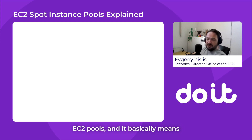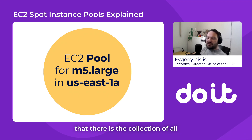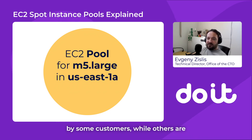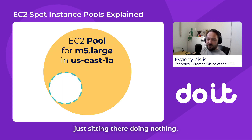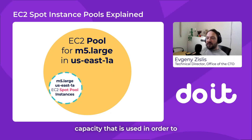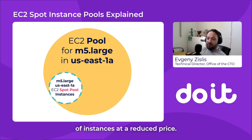There's this concept called EC2 pools. It basically means there is a collection of all the EC2 compute instances. Out of all those instances, some of them are used for on-demand purposes by customers, while others are just sitting there doing nothing. That spare capacity is what is used to provide the available spot capacity of instances at a reduced price.